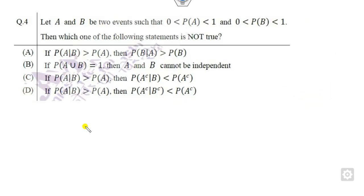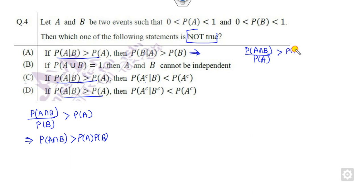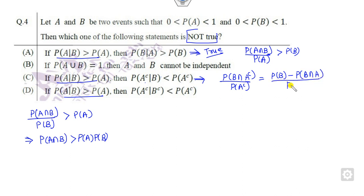Question 4: which of the following is not a true statement? Looking closely, two options appear similar — they are B and B-complement, so the answer must be one of them. The condition P(A|B) = P(A) is given. Starting with the first option: P(A|B) = P(A∩B)/P(A) = P(B), so that matches statement 2 — correct. For P(B|A^c): this equals P(B∩A^c)/P(A^c) = [P(B) - P(A∩B)] / P(A^c).